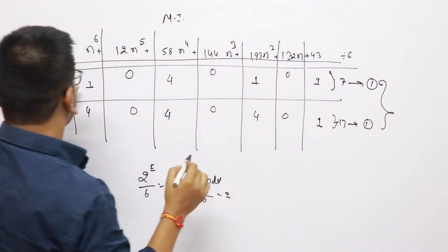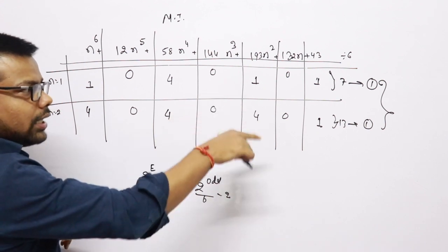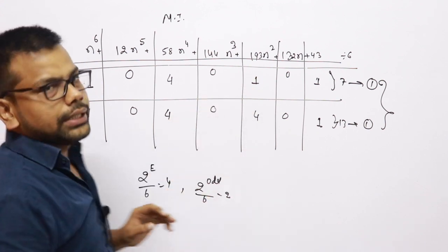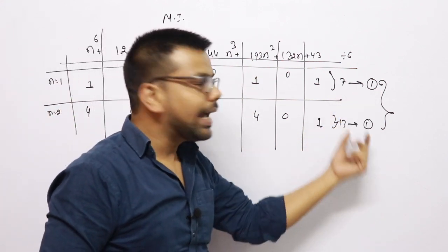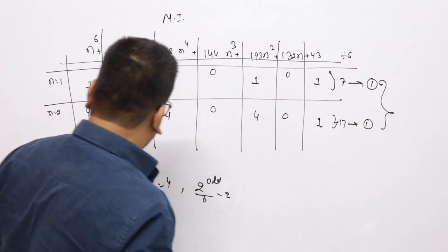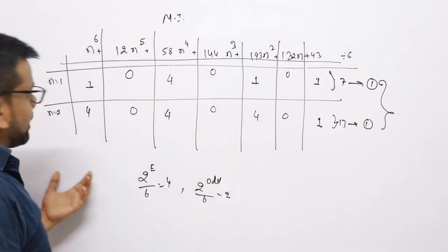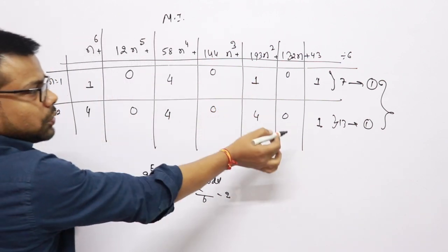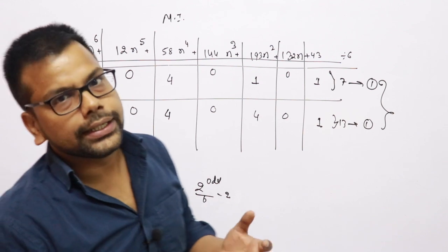So whenever you see this type of question, put n equal to 1 and n equal to 2. If the remainder is the same for both, the chances are that the remainder will be the same for all n. In this case the remainder is 1. If the answers are different, then the answer cannot be determined.